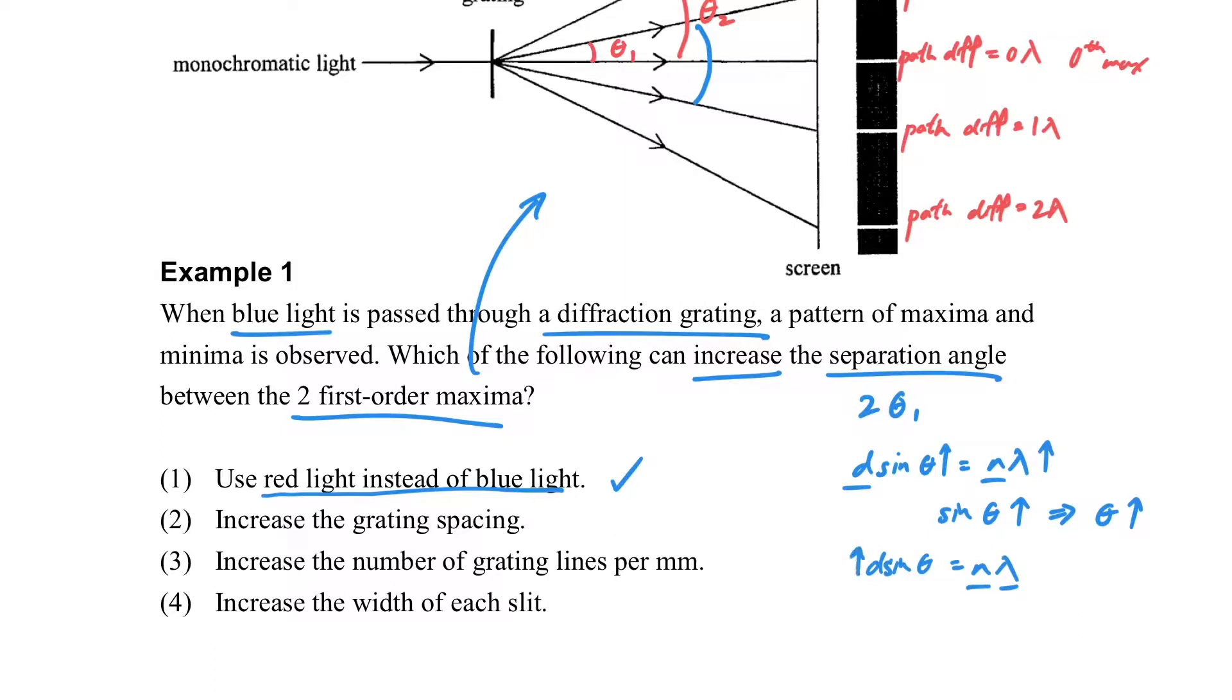If we increase the grating spacing, that means we increase d, so sin θ will decrease. When sin θ decreases, θ will also decrease. If we increase the number of grating lines per millimeter, we decrease the grating spacing, so with the same idea we get the same result.